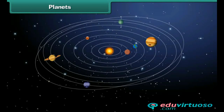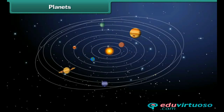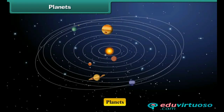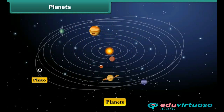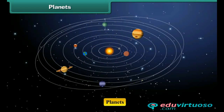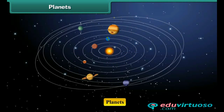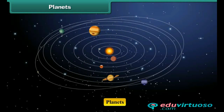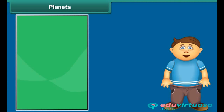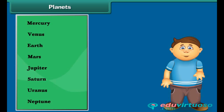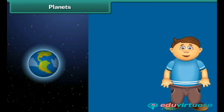Now we move on to the next topic — planets. Before some time, Pluto was considered the ninth planet of our solar system, but according to recent research it is no more counted as the ninth planet. So there are only eight planets in our solar system. These are Mercury, Venus, Earth, Mars, Jupiter, Saturn, Uranus, and Neptune.